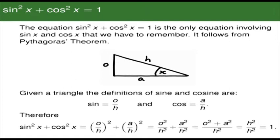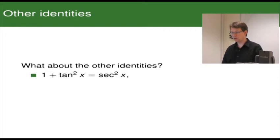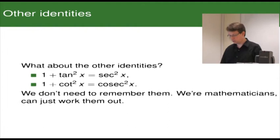Now, there are other identities, such as 1 plus tan squared x equals sec squared x, and 1 plus cot squared x equals cosec squared x. We don't actually have to remember these — as mathematicians, we can just work them out.